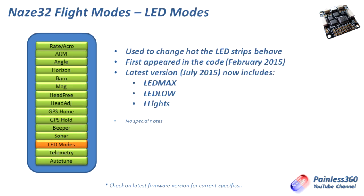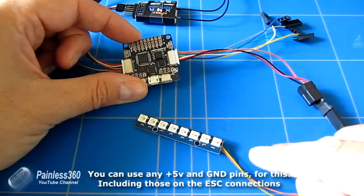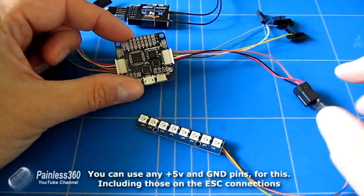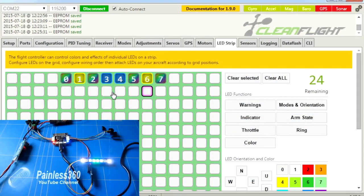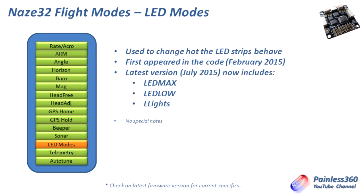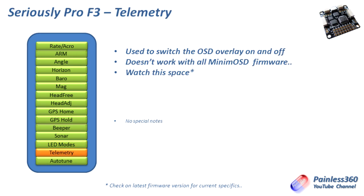There are three LED modes at the moment: LED max, LED low, and landing lights — these are settable so you can change how the LEDs behave. The fifth video in this series shows how to install LEDs onto the craft and use individually addressable LEDs that change colour based on what's going on with Cleanflight and the SP3. There's also a telemetry mode that turns telemetry on and off. Telemetry on the SP3 is fantastic — it allows the use of smart port telemetry with receivers like the X4R used in this series without any additional boards or hardware.